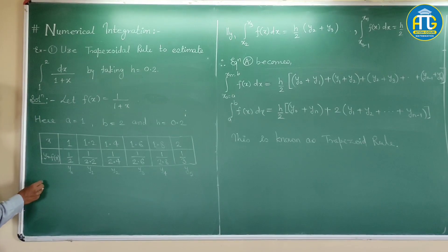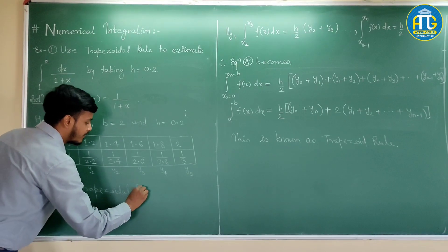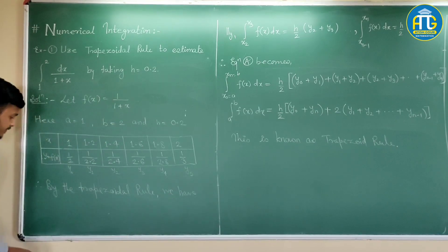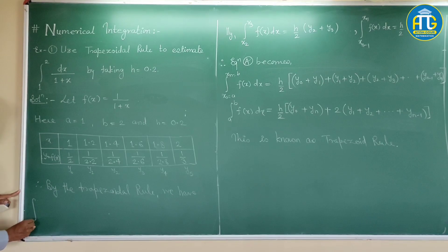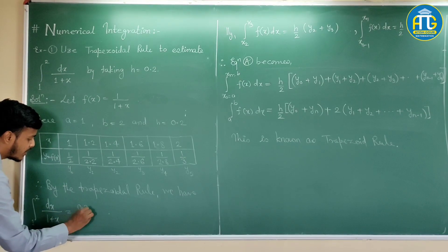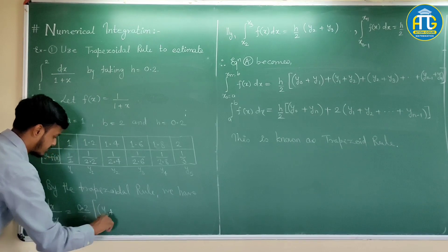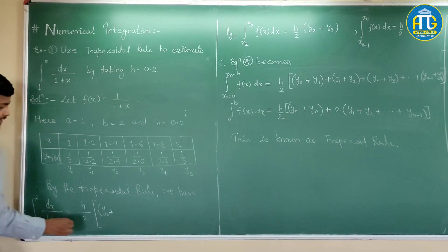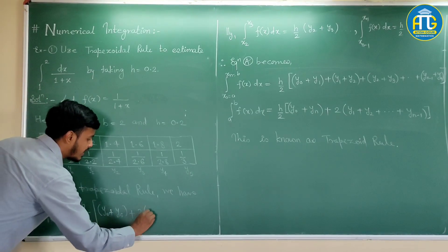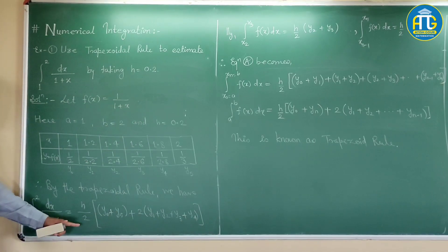Let us do the integration of this numerical integration. We can write by the trapezoidal rule. Accordingly, we will write integration from 1 to 2 dx upon 1 plus x can be written as h by 2, so value of h is 0.2 by 2 into y0 plus yn is 5. If you want, I can write for the timing h by 2, y0 plus y5 plus 2 times y1 plus y2 plus y3 plus y4. Now, just simple calculations.